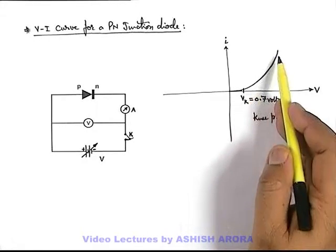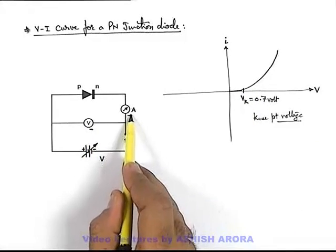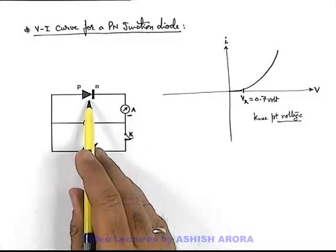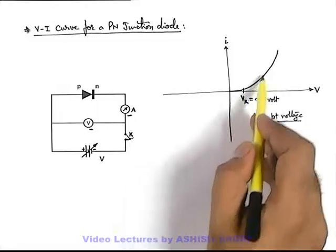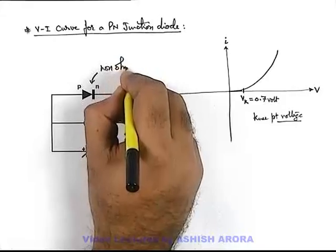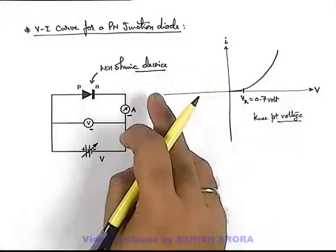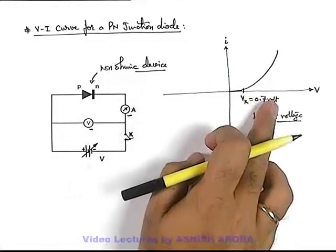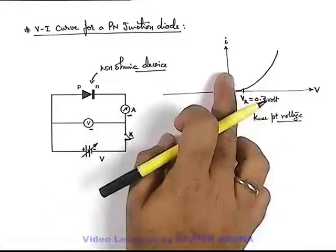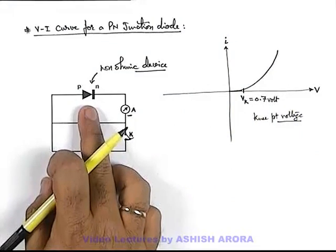You can see this is not a linear graph, which is plotted by different readings of voltmeter and ammeter across the PN junction. As this is not a straight line, we can say that PN junction diode is a non-ohmic device. According to Ohm's law, potential and current must be proportional to each other, so for ohmic devices the V-I curve is always a straight line. As it is not a straight line, PN junction is a non-ohmic device.